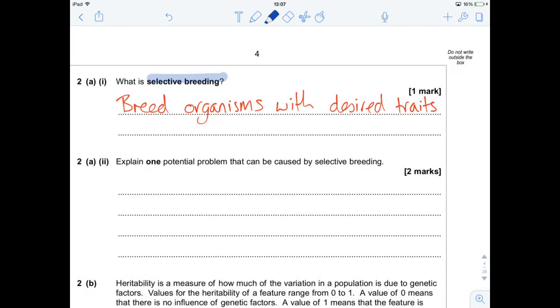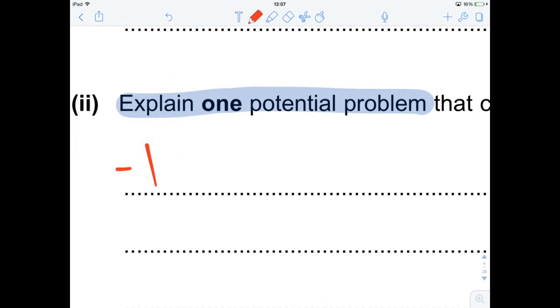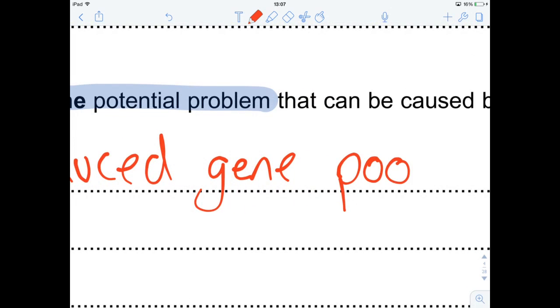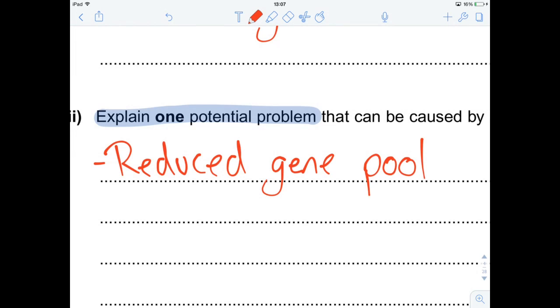But this leads to problems. Explain one potential problem that can be caused by this. One simple one is you reduce the gene pool, so reduced genetic diversity is a problem. And the reason why this is so much of an issue is the reason why it's reduced so much is if you want recessive traits or you want more rare traits, you end up doing back crosses or you end up breeding organisms that are closely related. That's a bit of an issue.